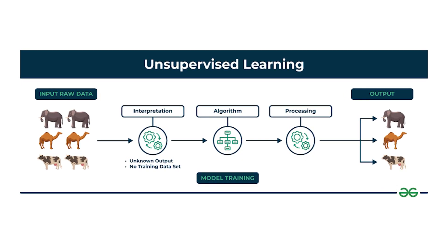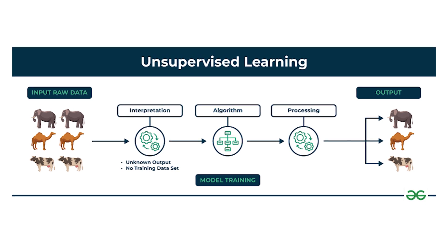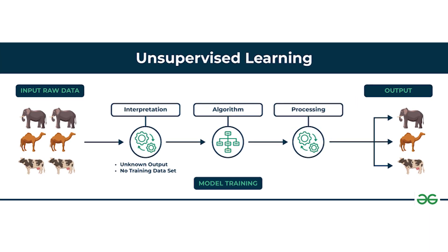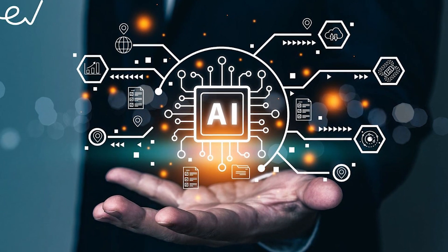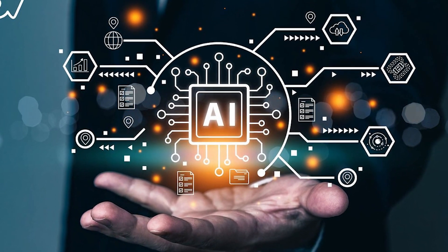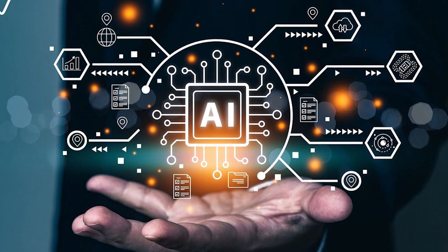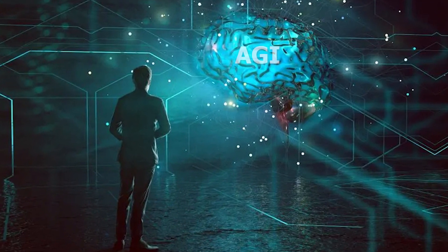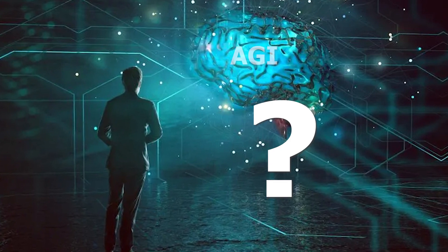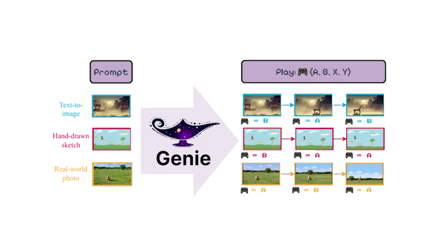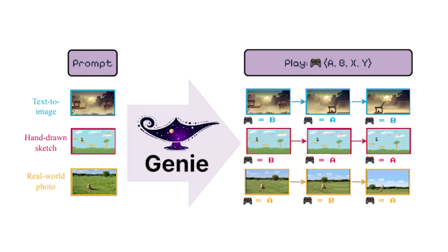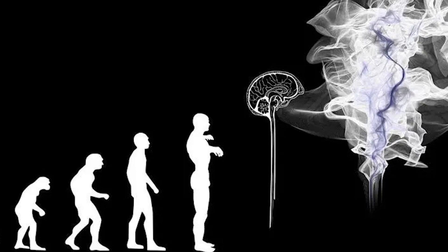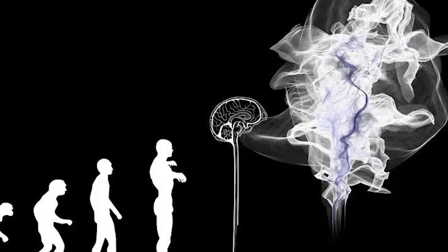Genie breaks free from the constraints of supervised learning, venturing into the untamed realm of unsupervised discovery, absorbing character motions, physics, and gameplay dynamics. This can be translated to an AI model that can interpret any environment it is exposed to and adapt accordingly — arguably the most important requirement for AGI. While this alone is not sufficient, Genie hints at an accelerated pace towards this goal, acting as a beacon signaling that AGI is not just a figment of imagination, but a destination we are actively approaching, one breakthrough at a time.